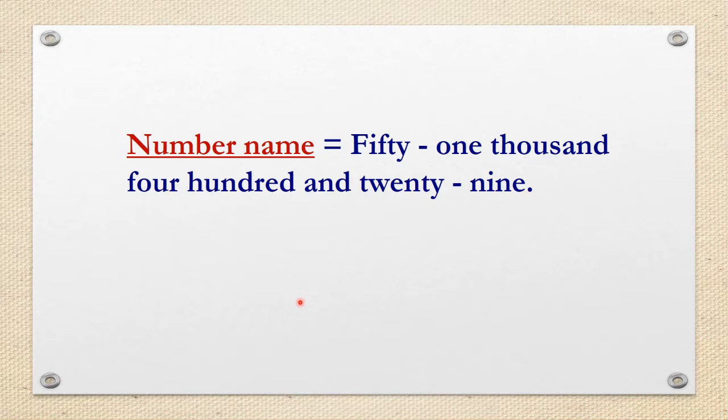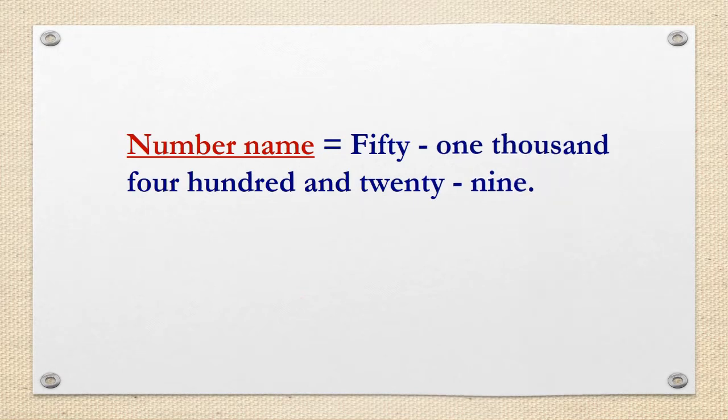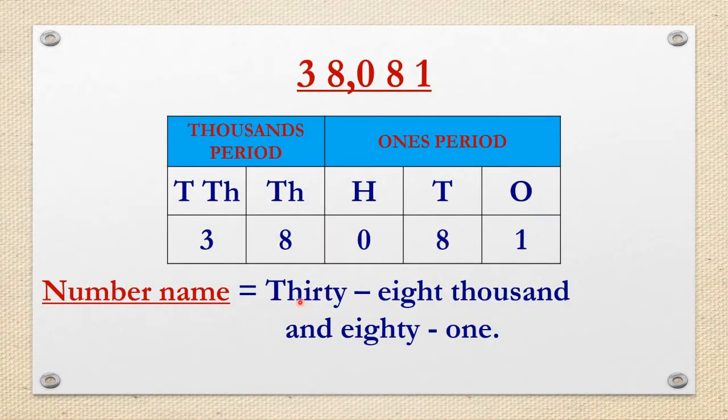Let us try one more example. Students, look at this number. We read it as thirty-eight thousand and eighty-one. We do not read zero hundreds.